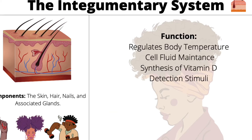The integumentary system is composed of the skin, hair, nails, and associated glands like our sweat glands. The skin is the largest organ in the human body, and its main functions are to regulate body temperature, maintain fluid balance — this is why we sweat through the eccrine sweat glands — make vitamin D, and detect stimuli, like when you feel something crawling on your skin.